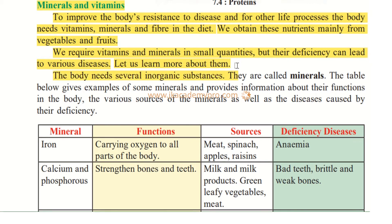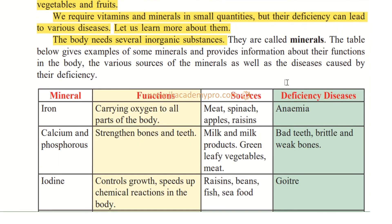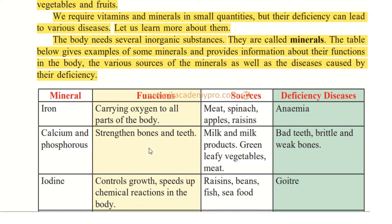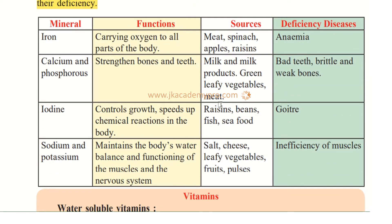Our body requires several inorganic substances called minerals. The table below gives examples of minerals and information about their functions, sources — meaning where we can get them — and the diseases caused by their deficiency. Let's read this in detail, as it is a very important table.